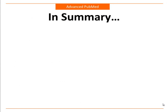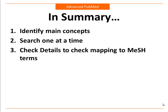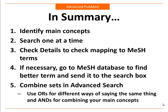In summary, to conduct an advanced search, you should first identify your main concepts. Search one at a time and check Details to see if you are automatically mapped to a good MeSH term or medical subject heading. If necessary, go to the MeSH database to find a better term and send it to the search box. Combine your best sets in advanced search using ANDs or ORs. Apply limits if necessary, and look for HANARI and Free Full Text buttons to connect to the full text of articles. This concludes Video 4, Advanced PubMed.